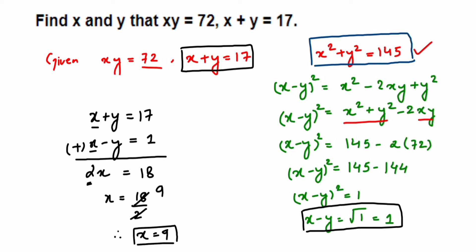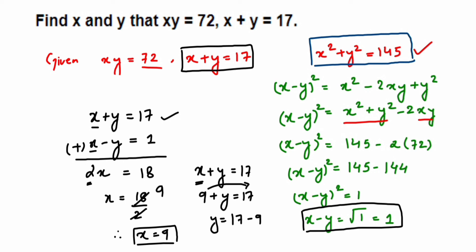Now substituting x = 9 into x + y = 17: 9 + y = 17, so y = 17 − 9 = 8. Therefore y = 8. That's how we get x = 9 and y = 8 using two algebraic identities. It's quite a simple method once you know which identities to apply. I hope it's clear — drop a comment below if you have questions. Thank you for watching!